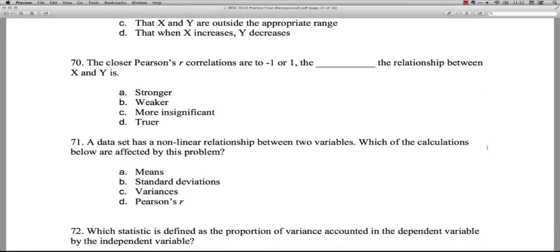Question 70: The closer Pearson's R correlations are to negative one or positive one, the blank the relationship between X and Y is. Actually, it's stronger. A is stronger because an absolute value of one is a perfect linear correlation for Pearson's R. And so, yeah, zero is no relationship at all. Plus or minus one is a perfect relationship. So A is stronger. It would only be weaker if they were going towards zero. More insignificant. That's cute because we don't even use the term insignificant in statistics. We talk about non-significant. And D, truer. We don't talk about true or false in this way. So anyhow, it's A.